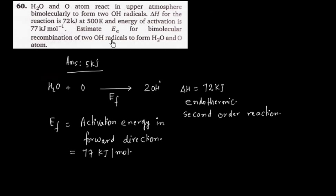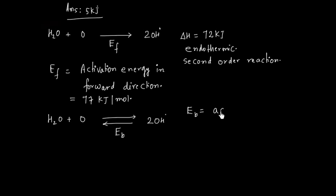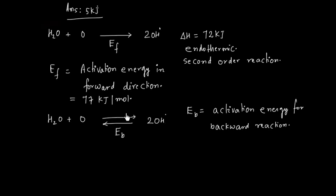We have to calculate the activation energy for the bimolecular recombination of OH radicals to form H₂O and oxygen atom — that is, we have to calculate the activation energy for the backward direction. Forward activation energy EF is given, and we have to calculate E backward.